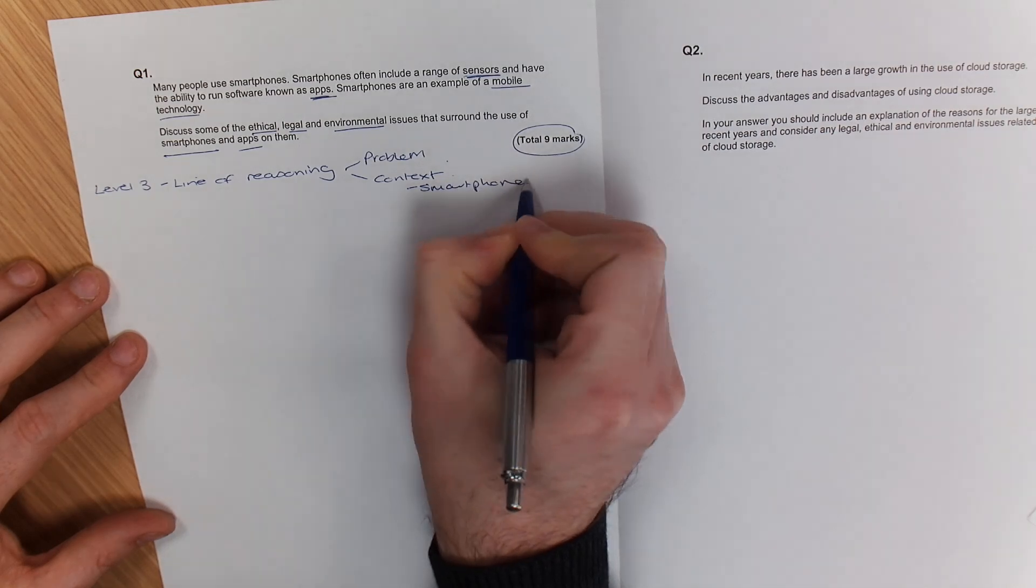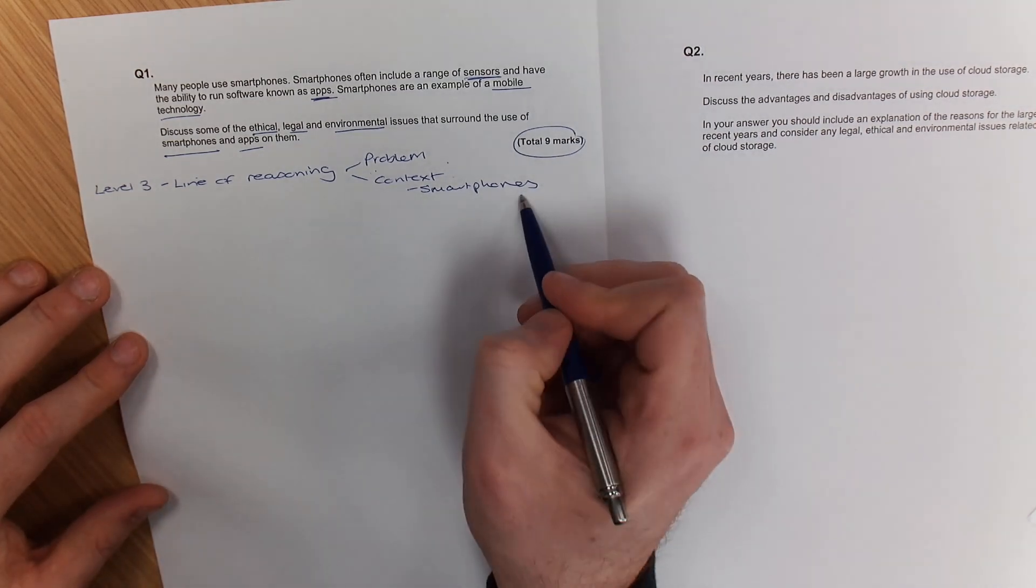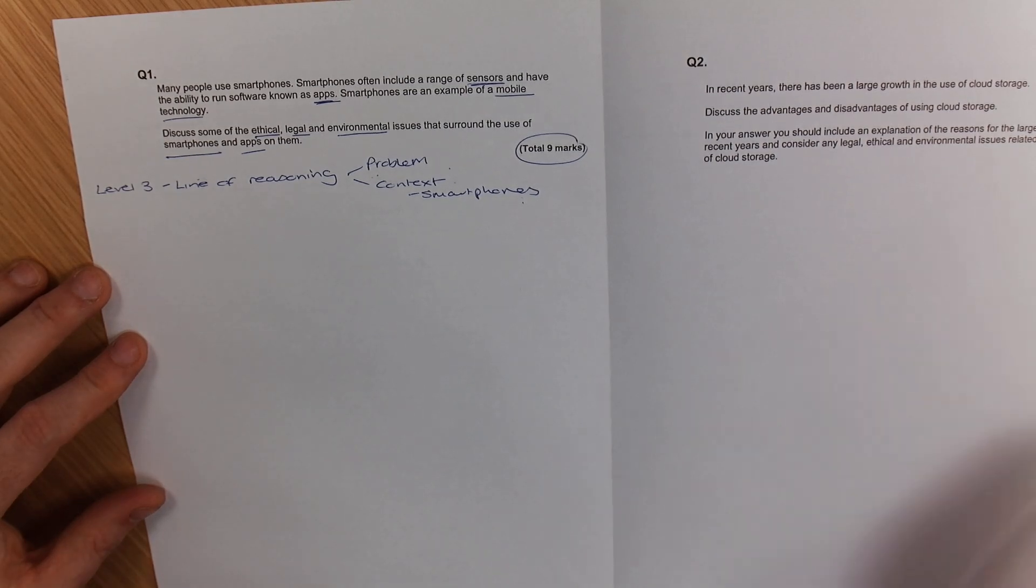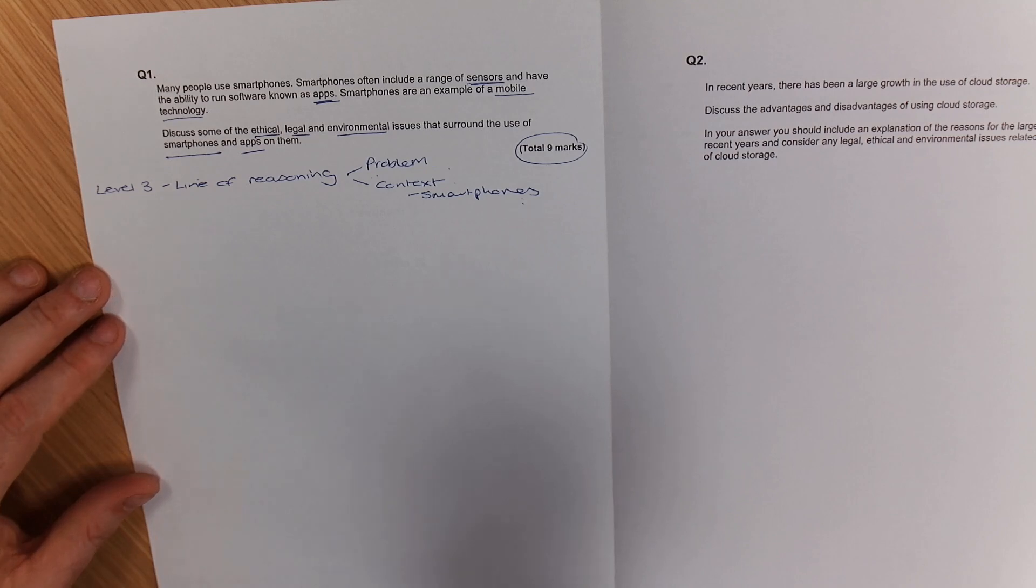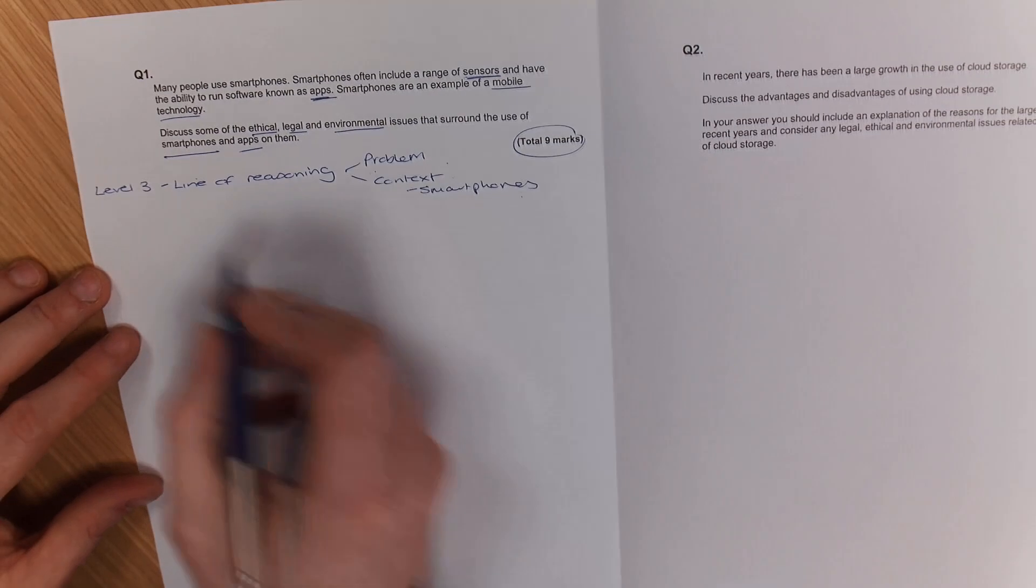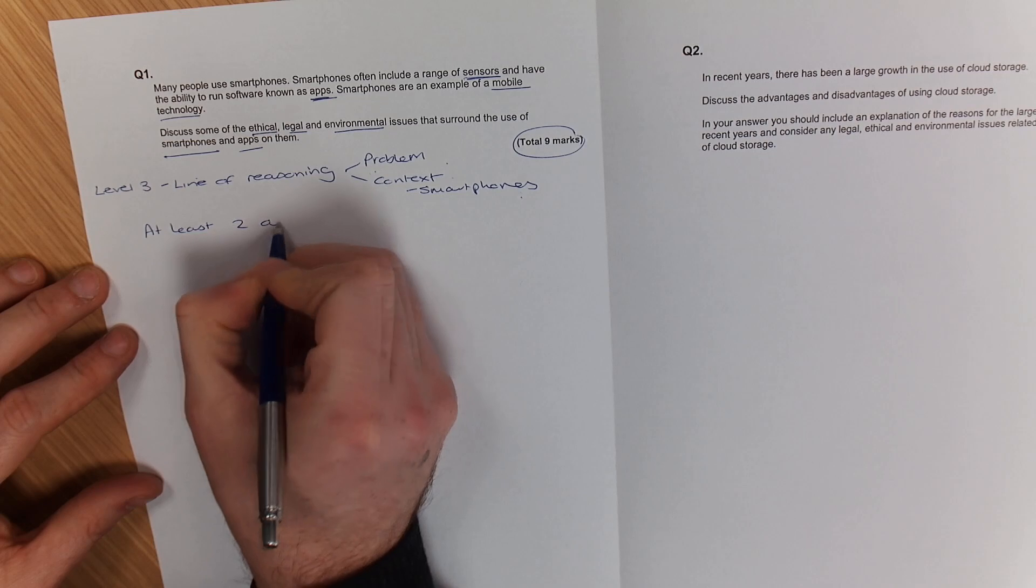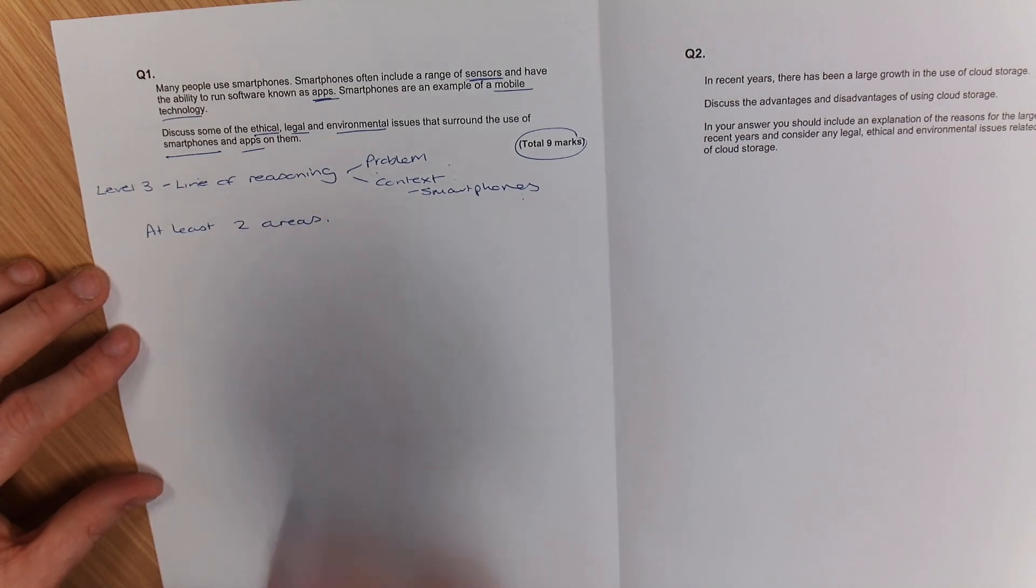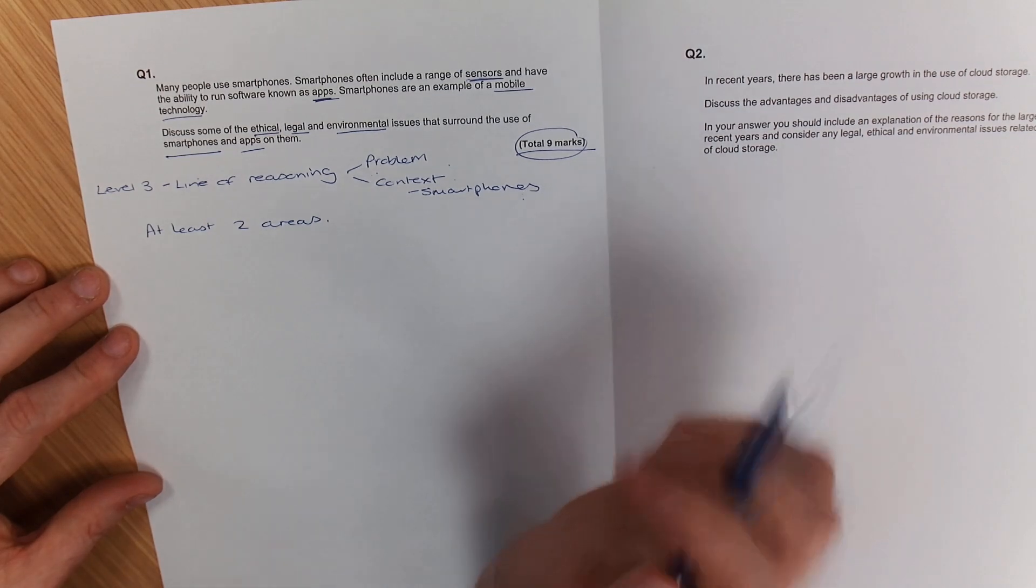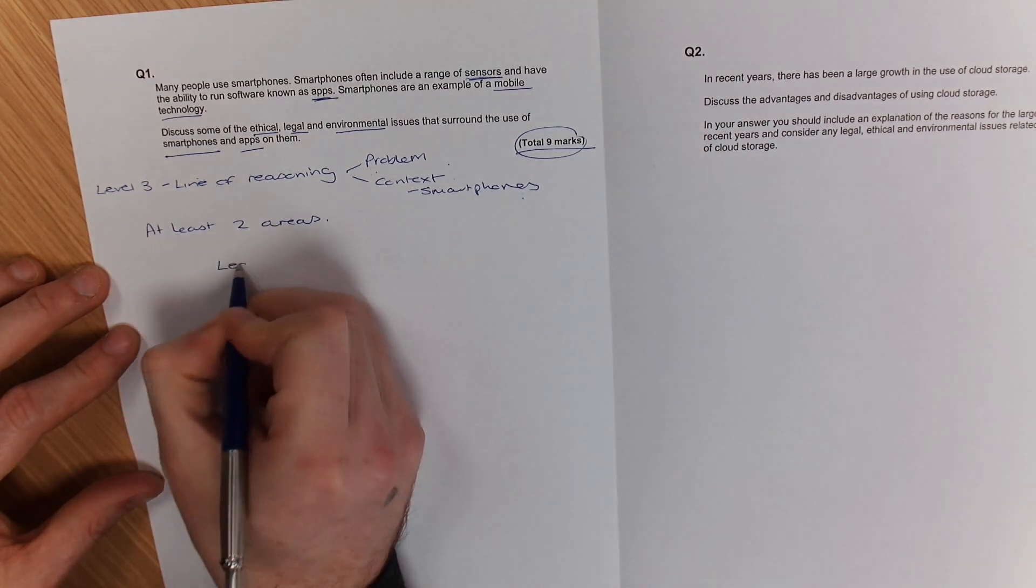So we've got that. Is there a line of reasoning? Does it talk about the problem such as smartphones? Now one key thing to take away from this: they usually want you to in order to get up into the seven to nine marks, they want you to usually cover at least two areas. That's usually to get the nine marks. But they need to be covered in enough detail.